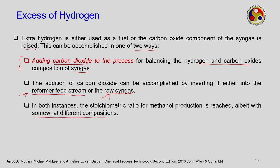The second method is installing an oxygen-fired secondary reformer after the steam reformer, or simply using autothermal reforming. Autothermal reforming combines two types of reactions: first an exothermic combustion reaction, then an endothermic reforming reaction, so that heat liberated from combustion is taken up by the reforming. This is how the autothermal reformer works.